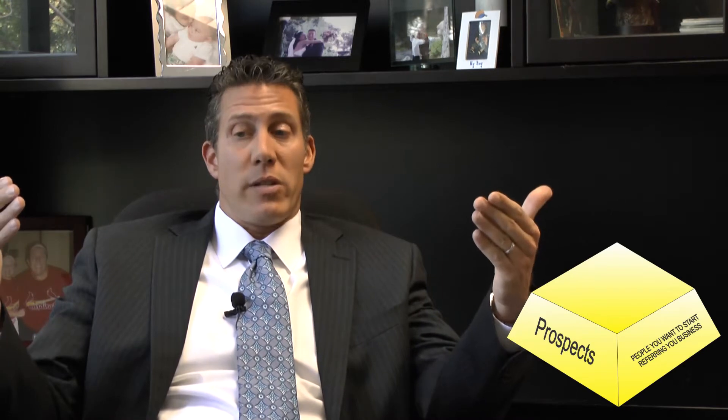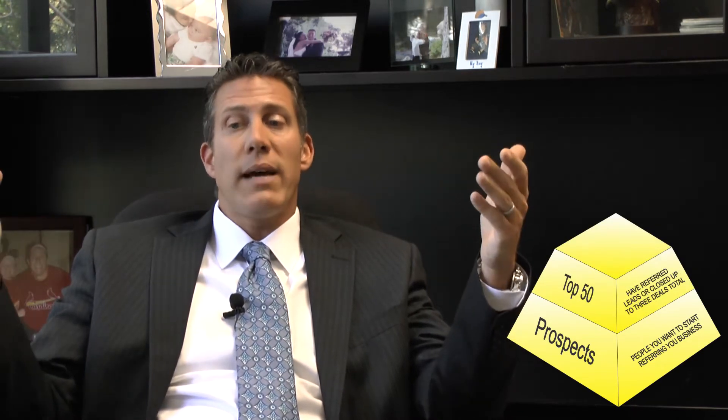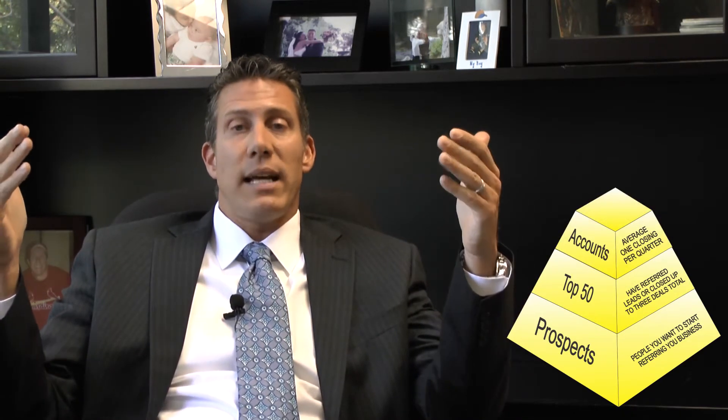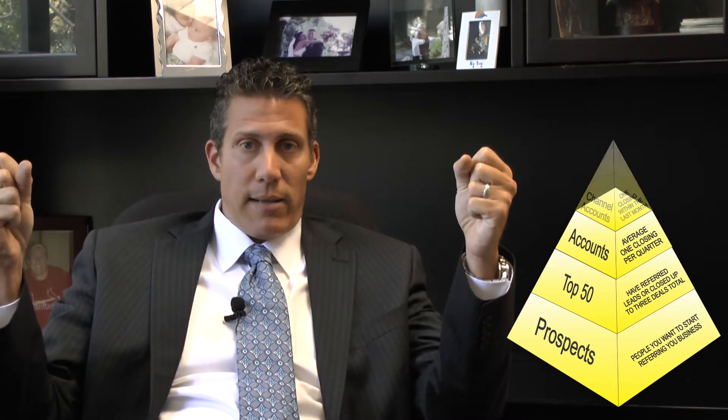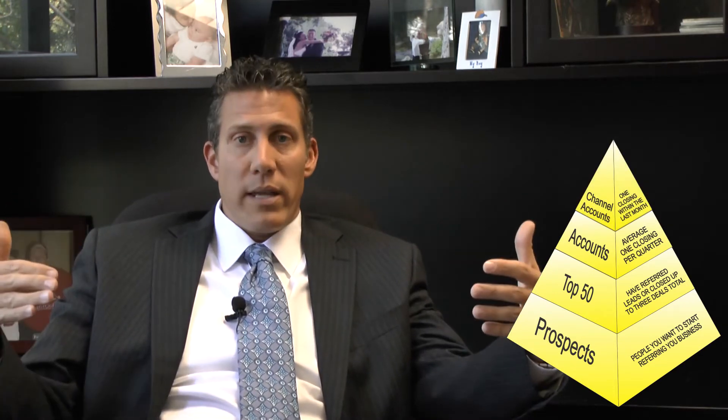At the bottom of the form, we have prospects. The second level up is our top 50 list. The third level is accounts. And the last level is channel accounts. We're going to explain what each one of these means.